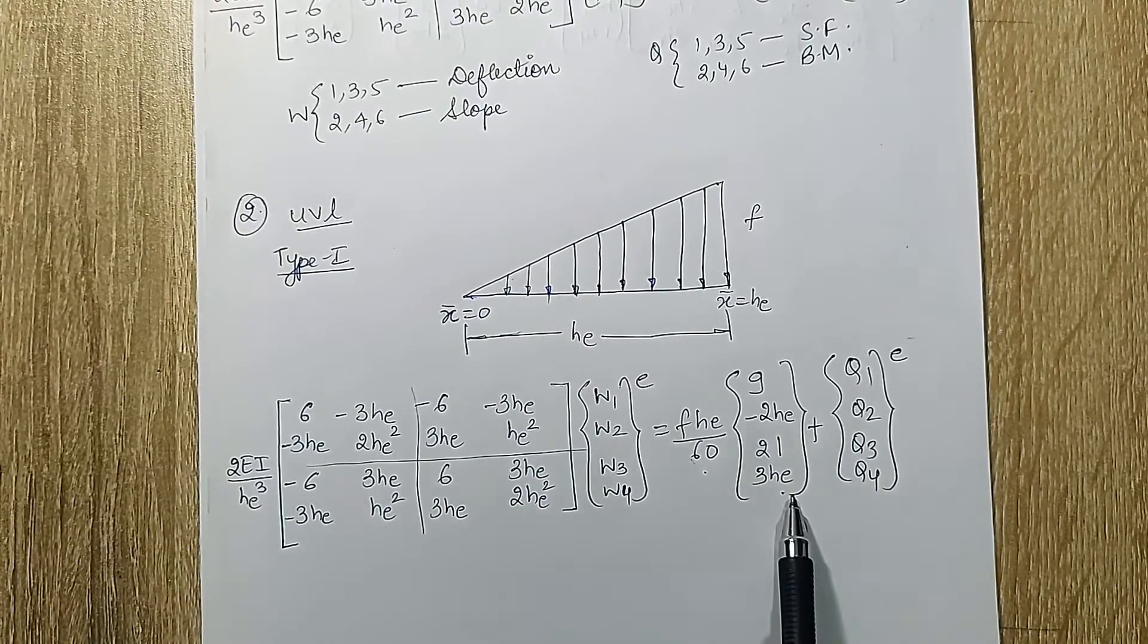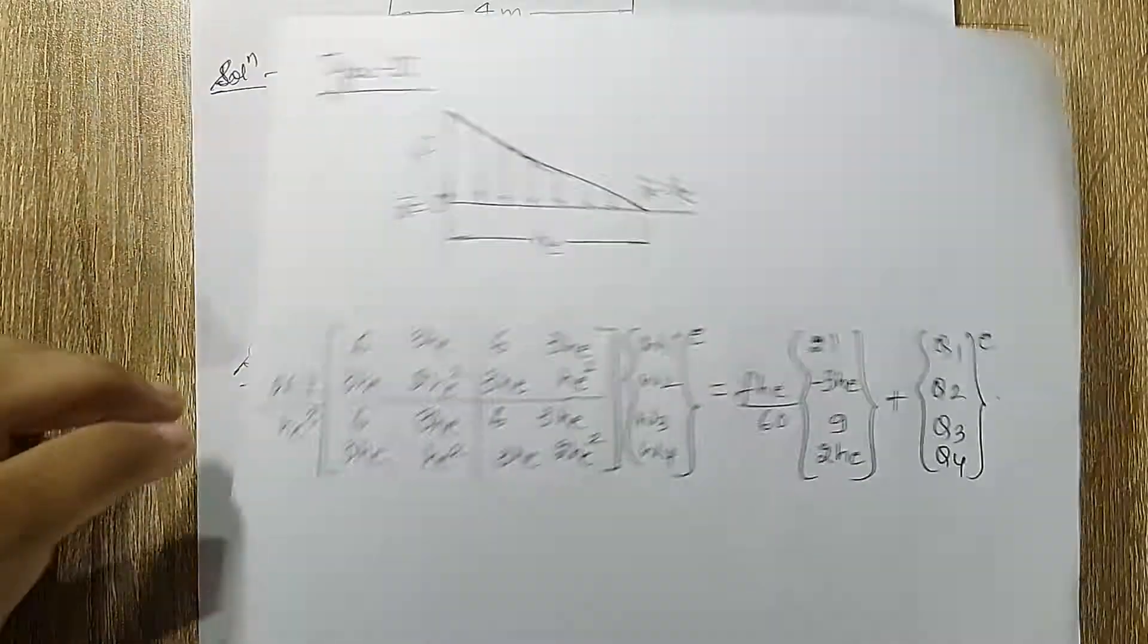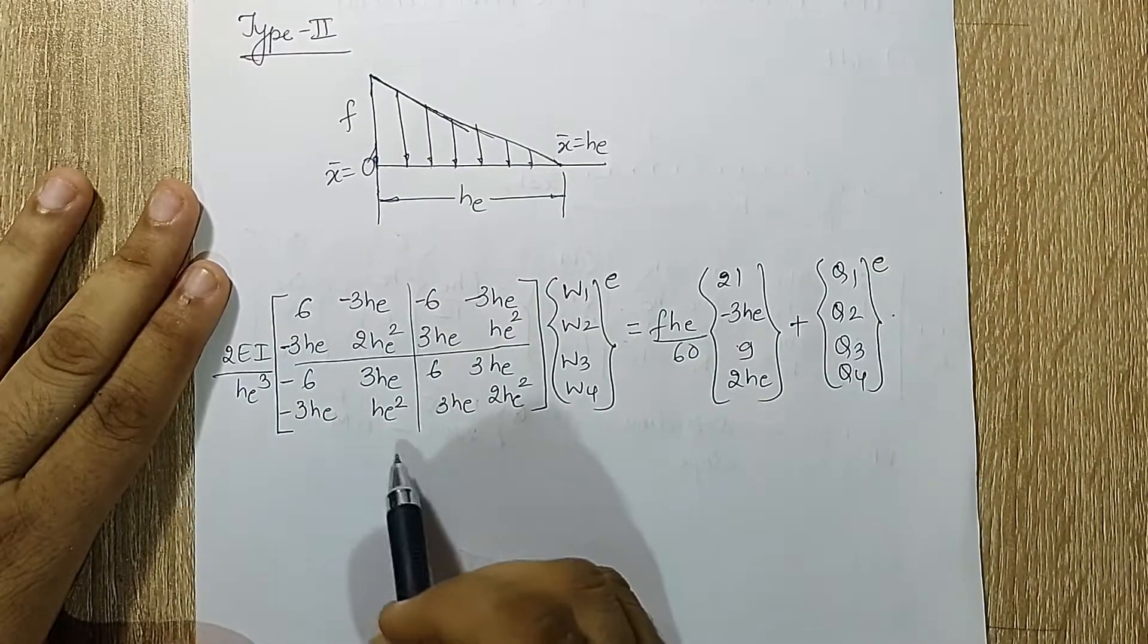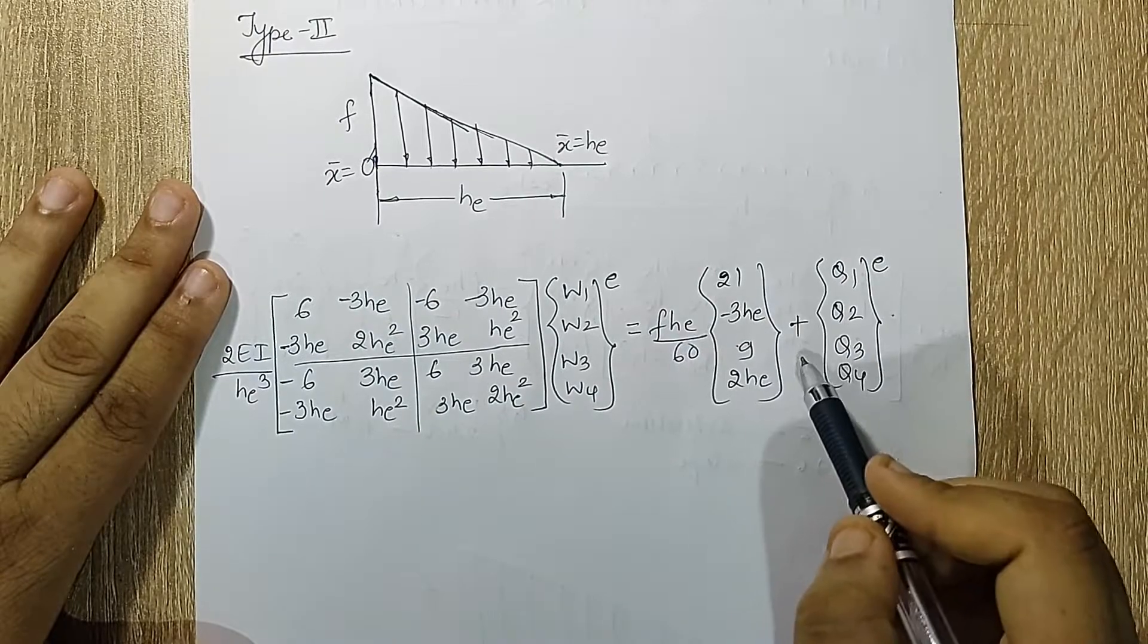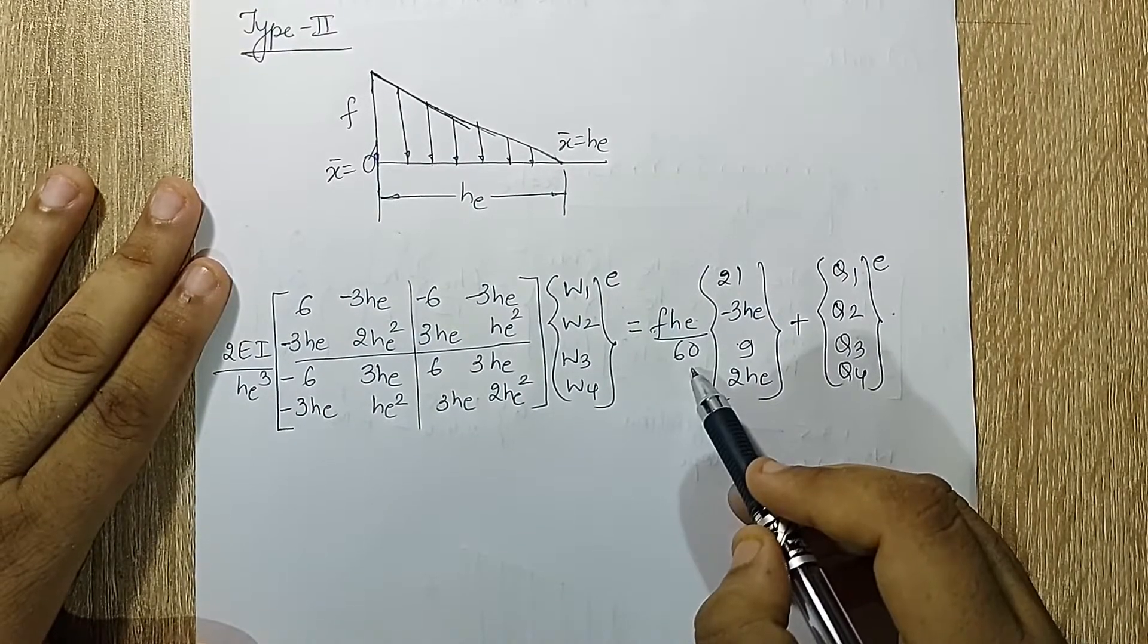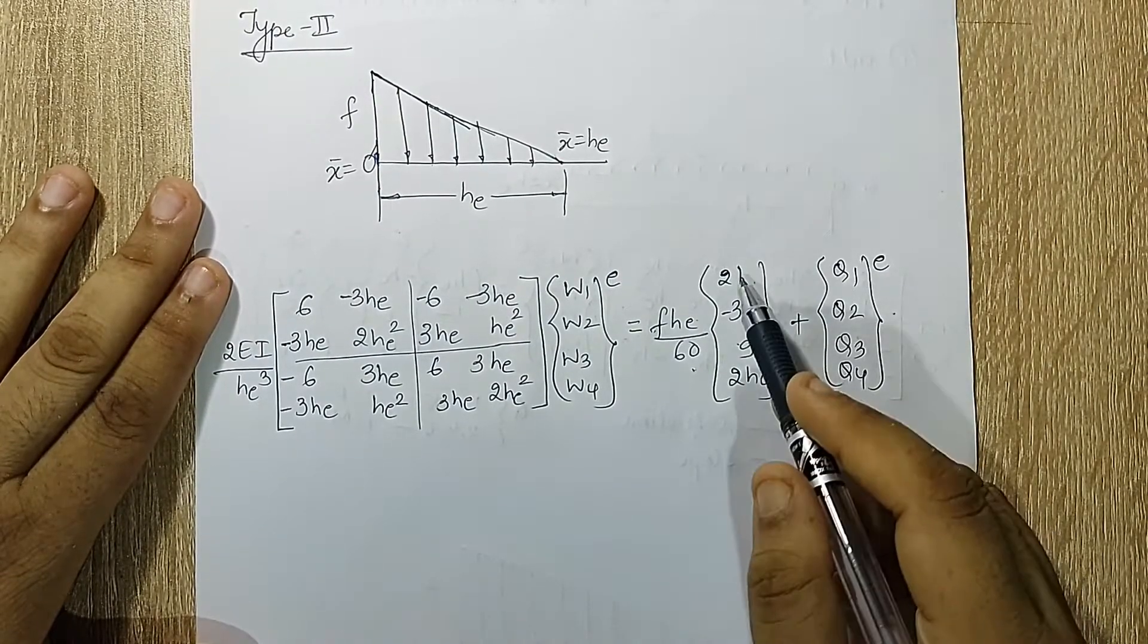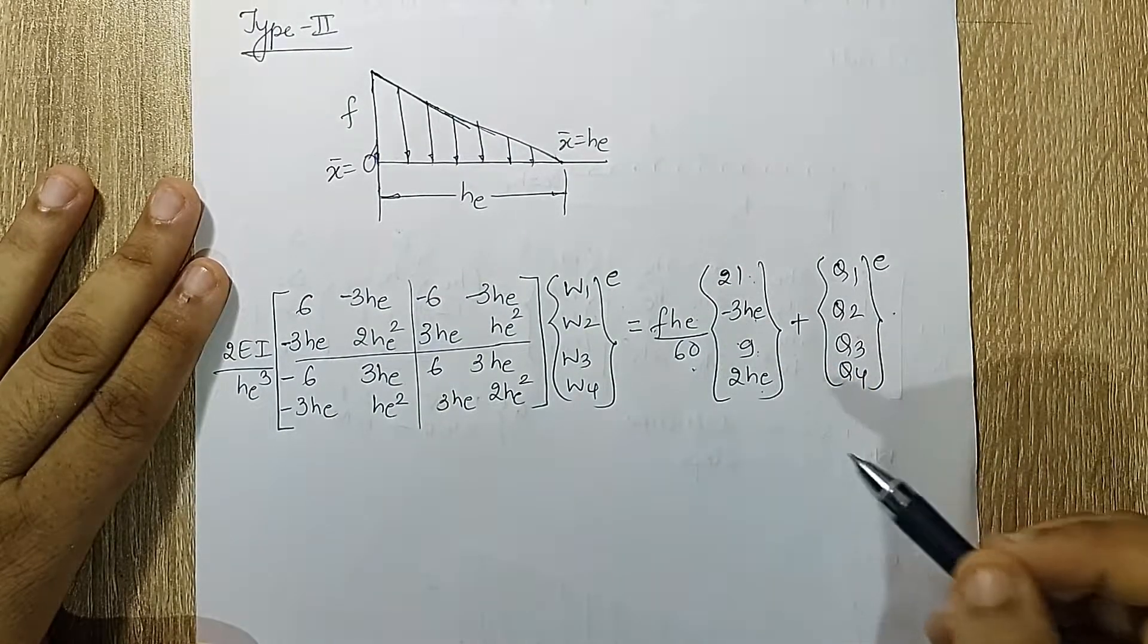When it comes to a decreasing type of UVL, this is the EME. The left hand side is the same like that of UDL. When you look at the right hand side, this is FHE upon 60 like type 1 of UVL. Here the numbers have got interchanged. Here you have 21 minus 3 HE, 9, 2 HE. So this is one portion which you need to remember for the UVL.